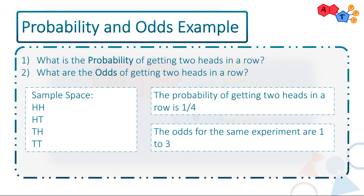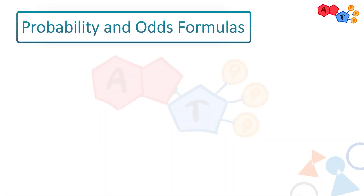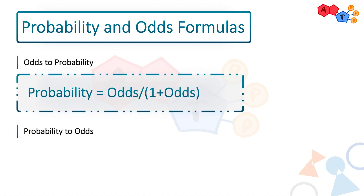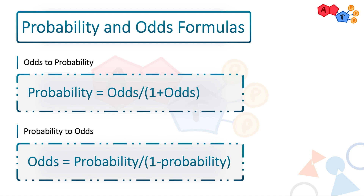One to three is awkward to express, so we usually keep the numbers in the form of x to one. So one-third to one is the exact same as one to three — we just prefer to keep things to one. They do have a link between them: for odds to probability, you take the odds and put it over one plus odds. For probability to odds, you take the probability and put it over one minus probability. Now let's put all of this together to understand how they fit into likelihood ratio.